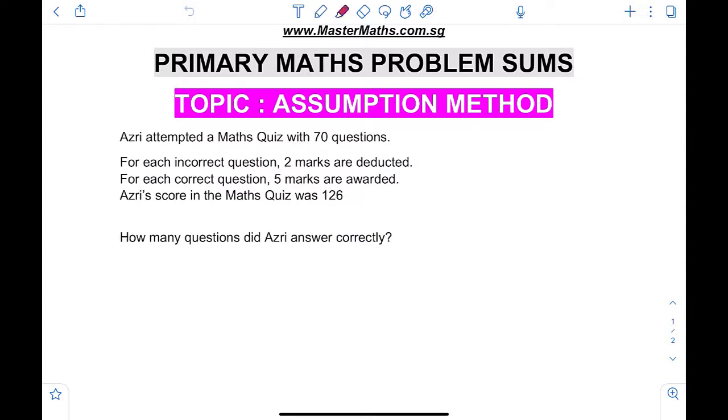Azri attempted a math quiz with 70 questions. For each incorrect question, two marks are deducted. Deducted means taken away. For each correct question, five marks are awarded. Azri's score in the math quiz was 126. How many questions did Azri answer correctly?